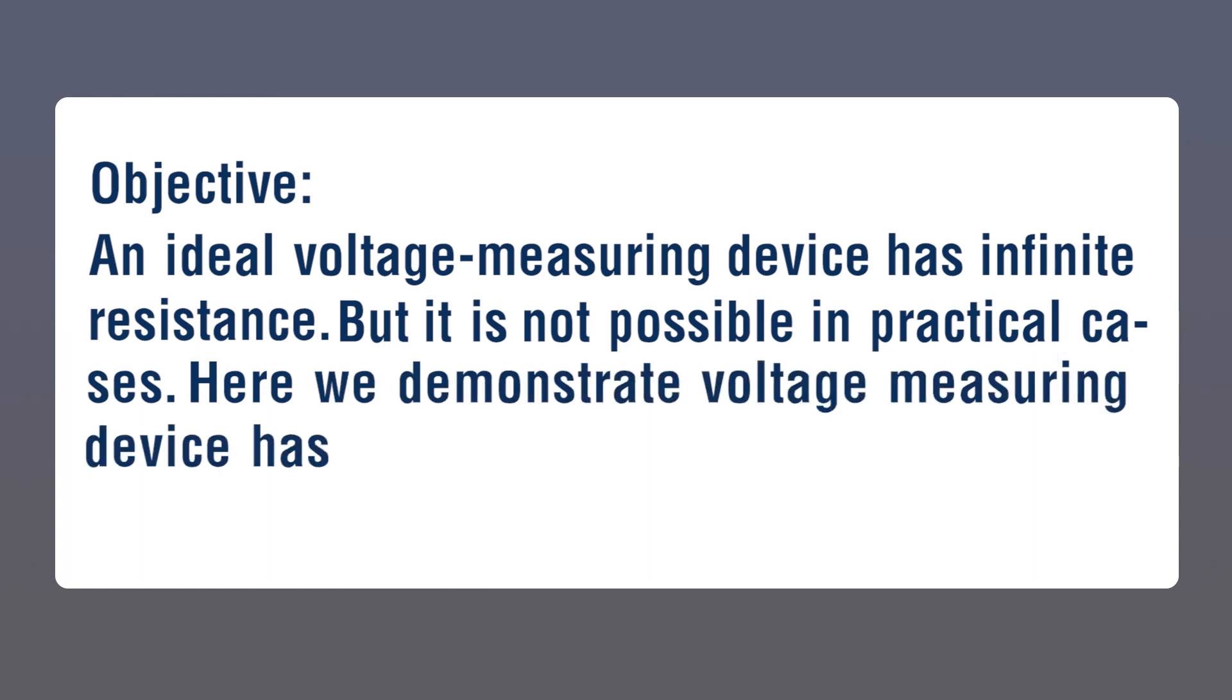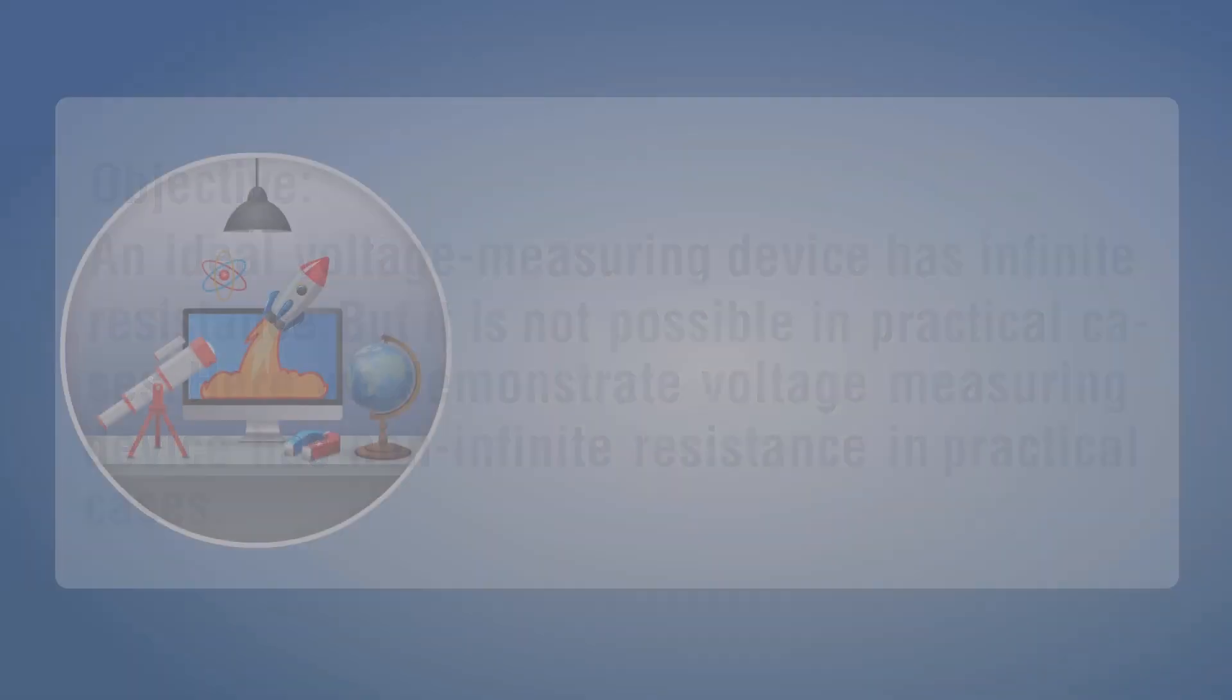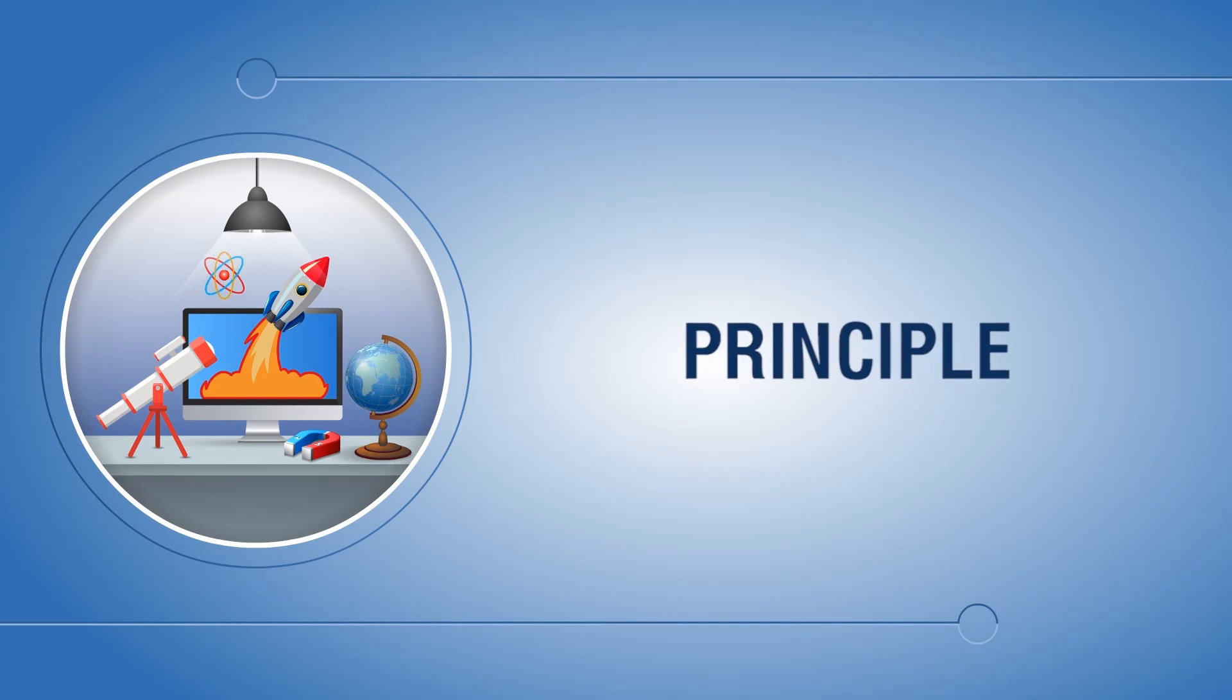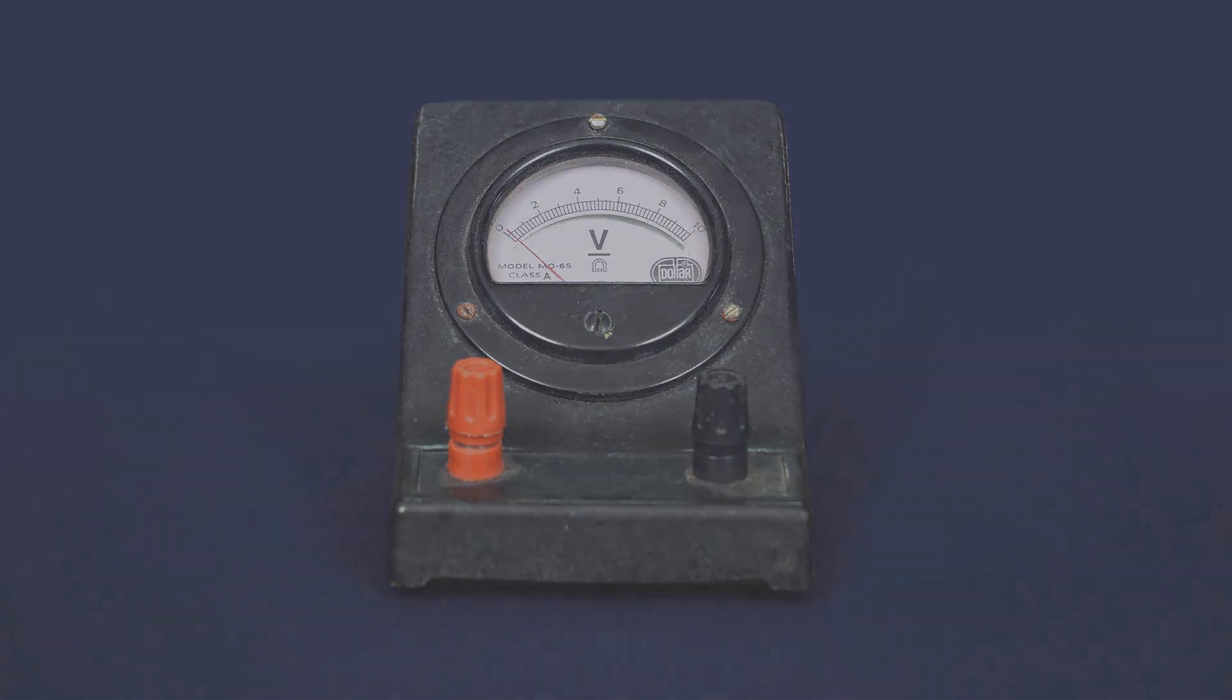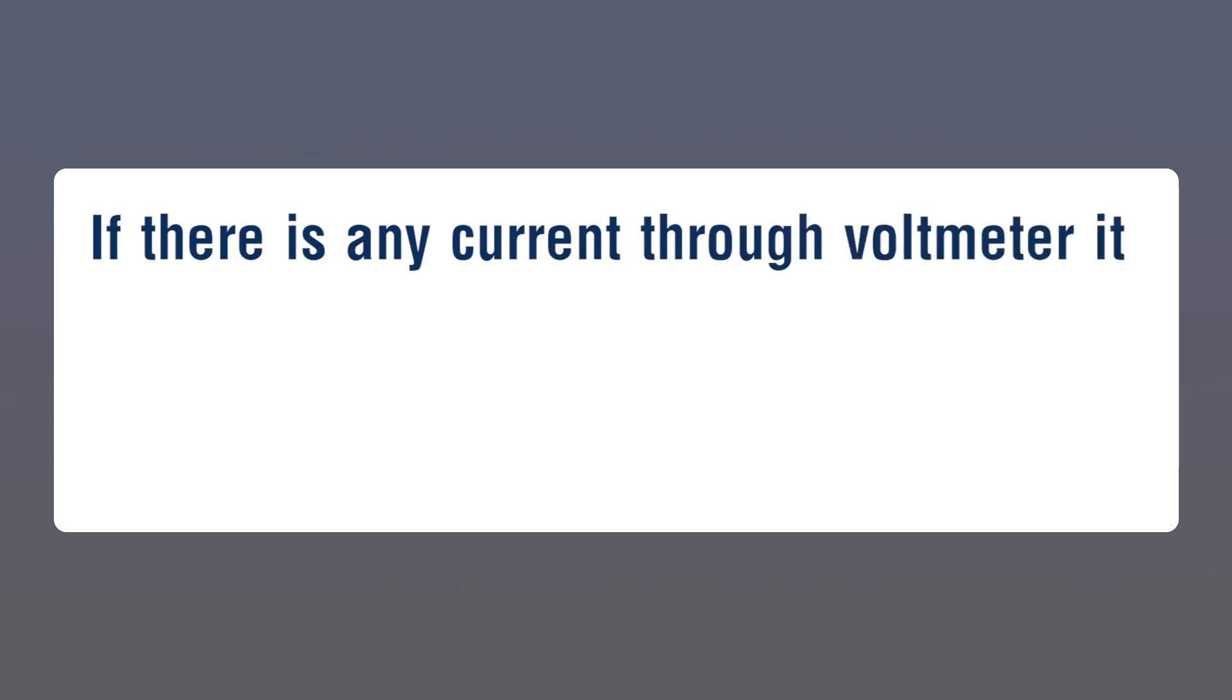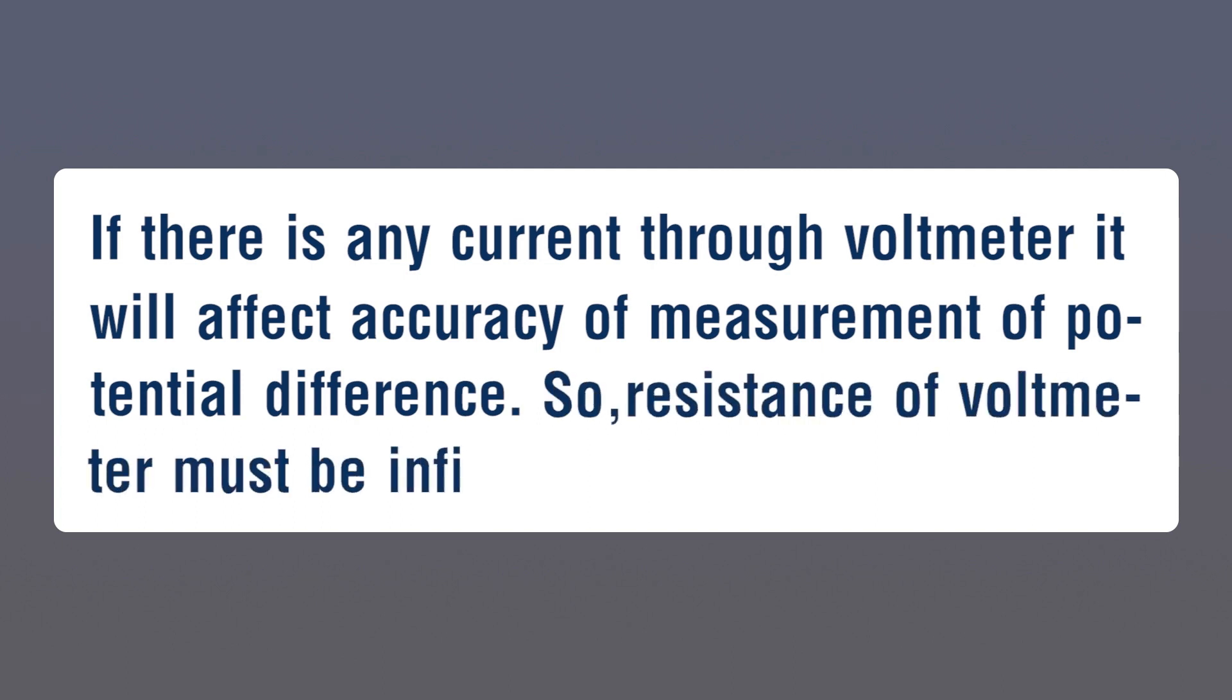Voltage measuring device has non-infinite resistance in practical cases. Principle: A voltmeter is a device used to measure potential difference between two points. If there is any current through the voltmeter, it will affect accuracy of measurement of potential difference. So resistance of voltmeter must be infinite.